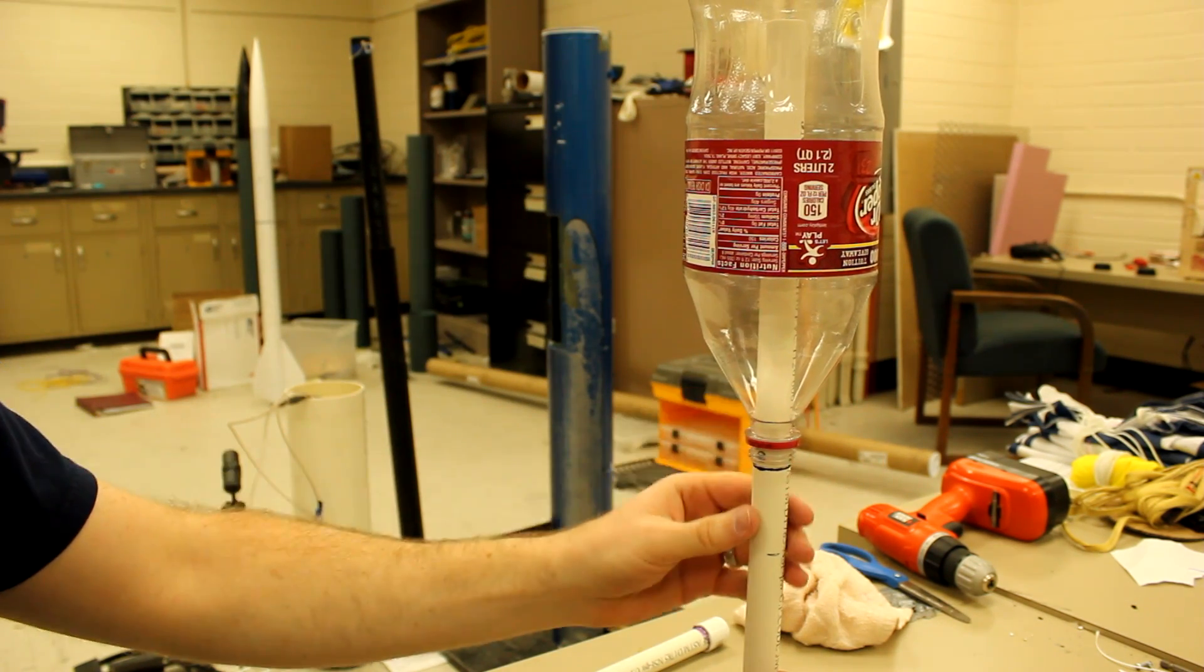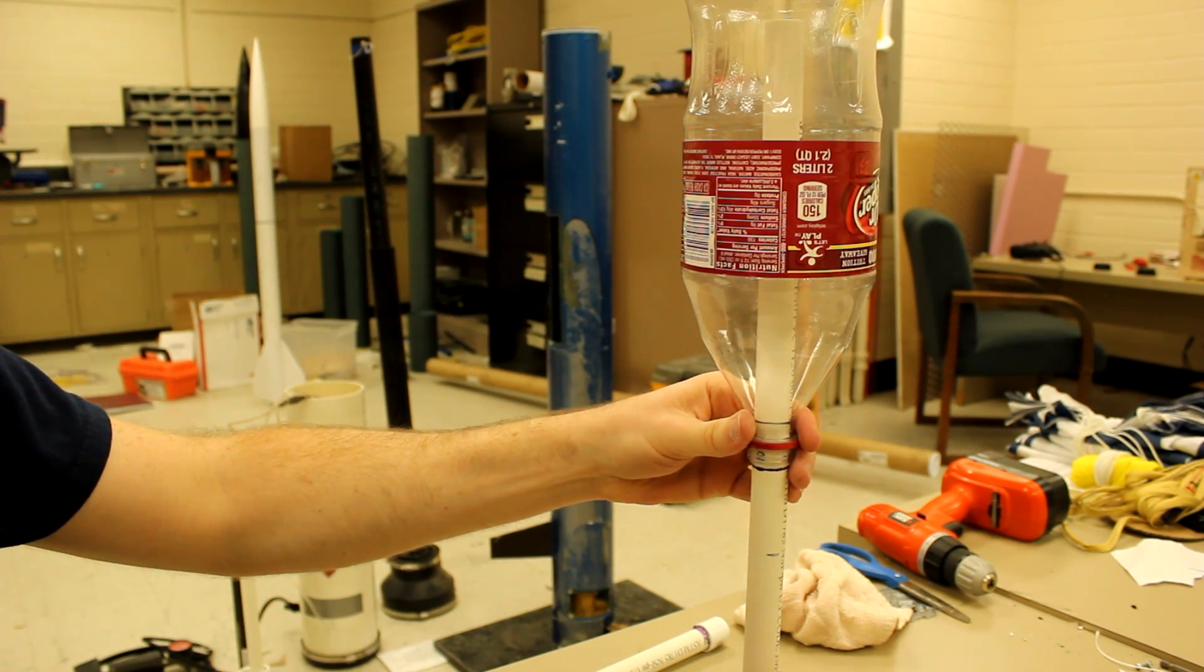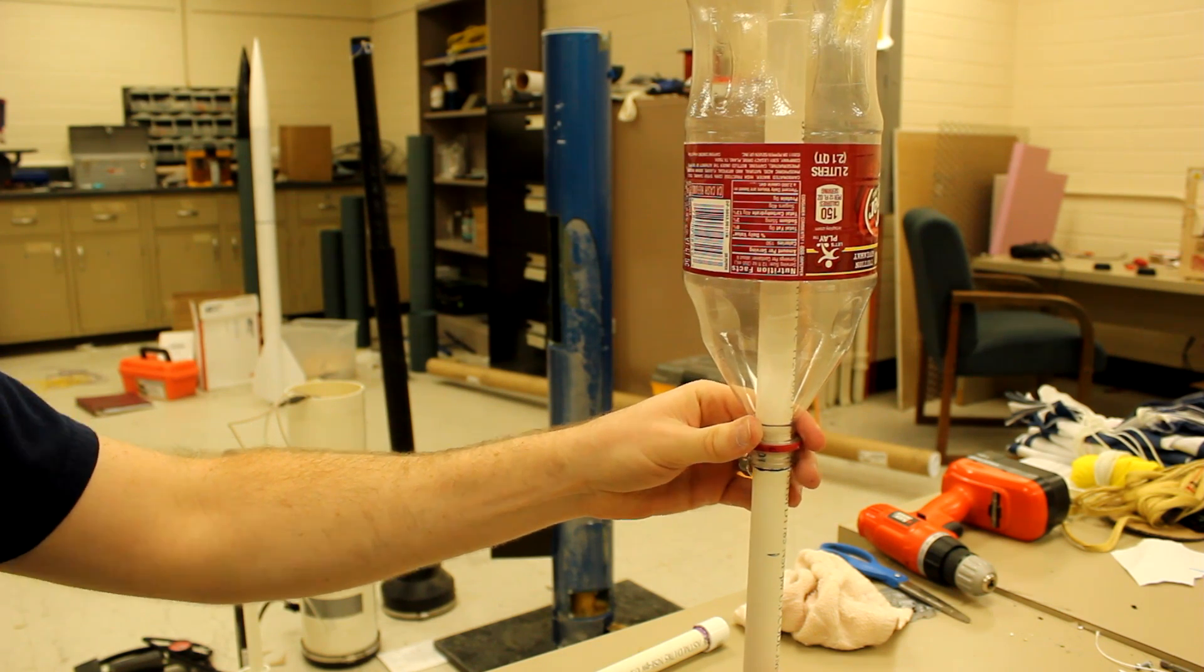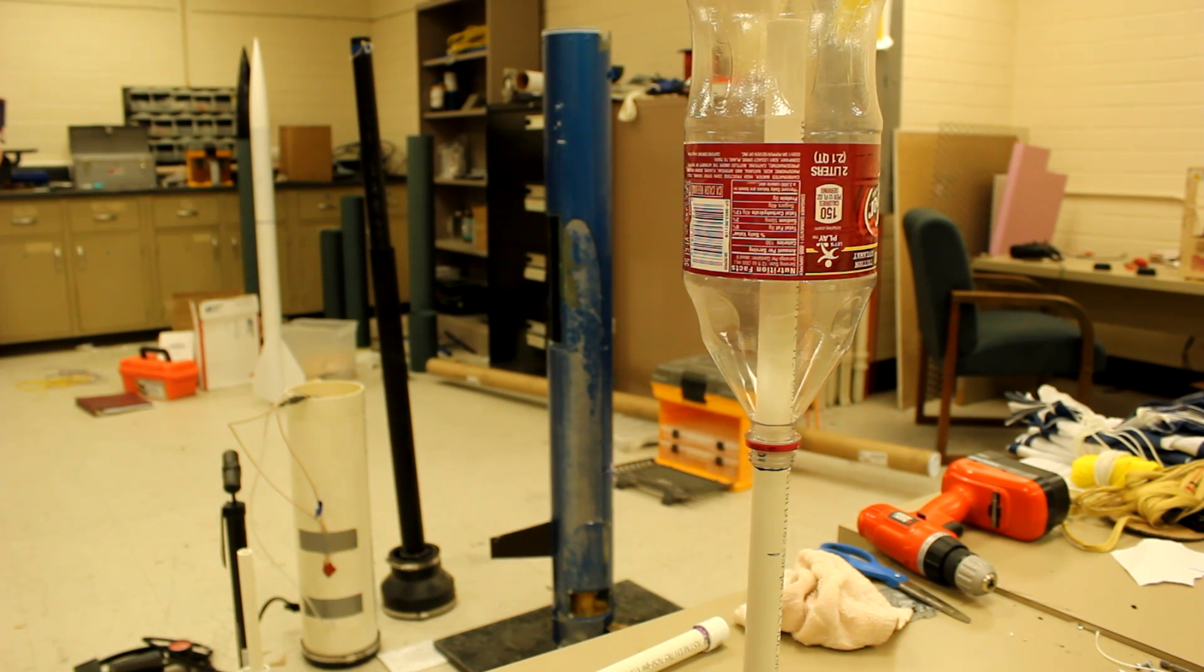Now you want to seat it on the bulge. Don't force it on farther than it needs to go. Just push it down until it feels like it's a good seal. And we're going to use that as a reference height.